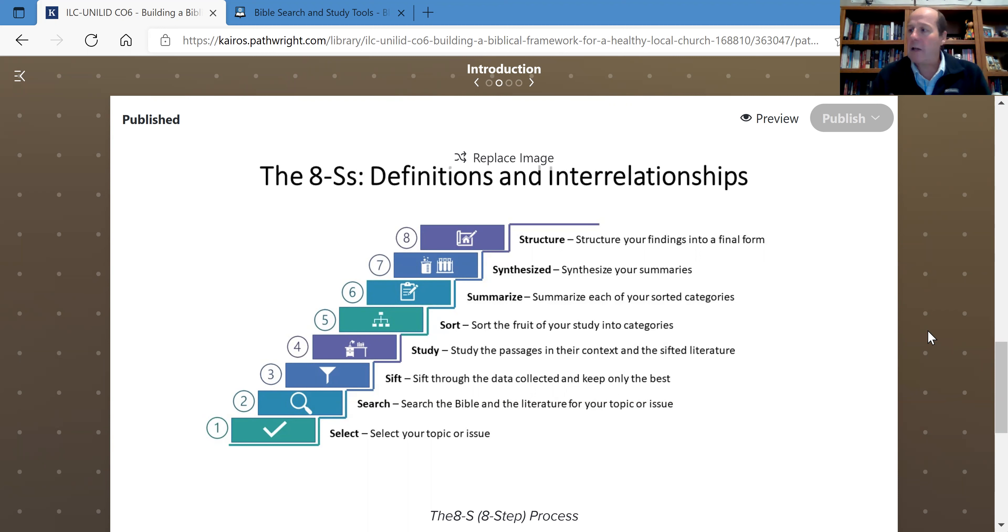Once you have these summaries, you need to think through how these summaries actually relate. This is where you're going to synthesize those summaries. You're going to make sure you understand the relationship between the various sorted elements. As you do that, you will begin to get a more comprehensive and integrated understanding of what the local church is.